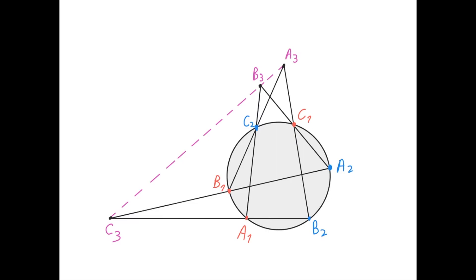Here is how Pascal's theorem looks when we choose the points on the circle in a different order: A1, then B1, then C2, then C1, then A2, then B2. Then A1, B2 intersects A2, B1 at C3; A1, C2 intersects A2, C1 at B3; and B1, C2 intersects B2, C1 at A3. The points C3, B3, and A3 lie on a straight line. The proof is analogous to the one given before.